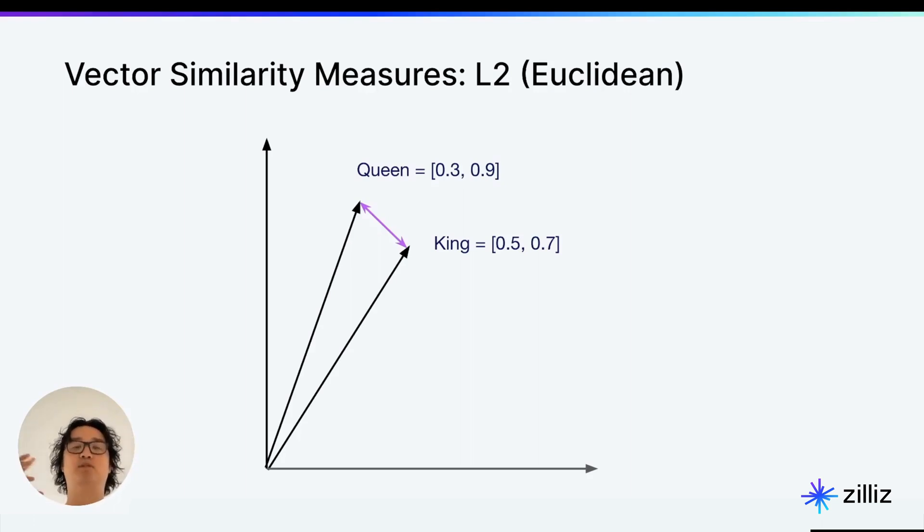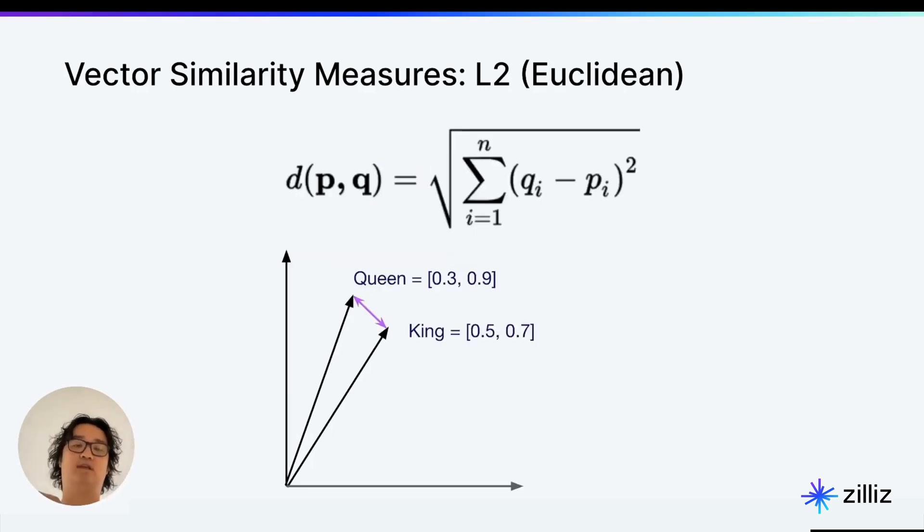And what it does is it measures the distance between two points. And the way it works is that we take a square root of the sum of all of the squares of the differences between each vector dimension. I know that sounds confusing, so we're going to take a look at this example, and hopefully it makes more sense.